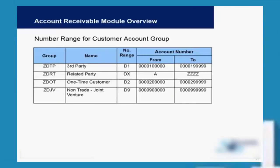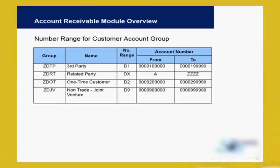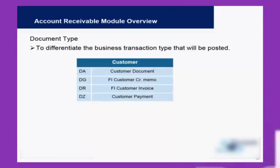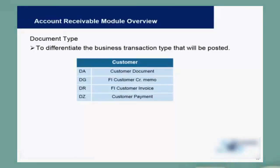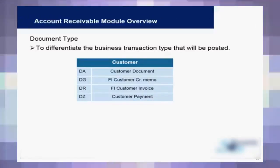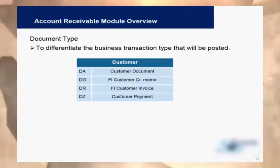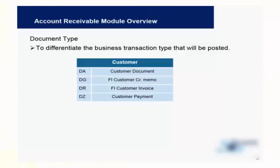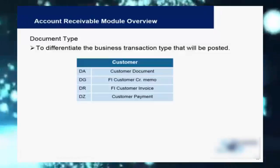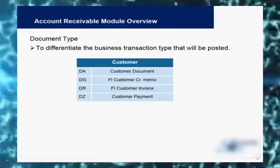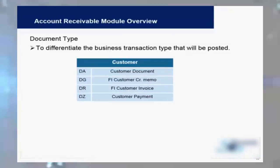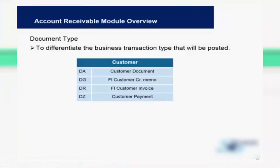This is an example showing how a number range can be defined for different account groups for customers. We also have different document types: one for making a payment to the customer, one for posting a customer invoice into accounting, and separate document types for invoices posted from the Sales and Distribution module. This is just an example list — more document types can exist in the system, and new ones can be created if the organization requires.